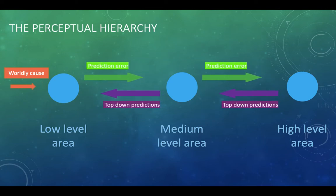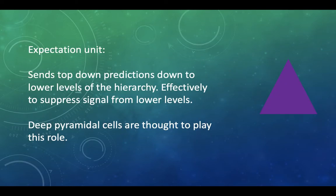Okay, so what do we need to actually do this on a neuroscience level? Well, we're going to need an expectation unit. So we're going to need something that can send top down predictions about what it's expecting at lower levels of the hierarchy. And by doing this, it can suppress the signal that's coming from lower levels. And it's thought the deep pyramidal cells might be able to play this role. Although I think it's all still being worked out exactly on a cellular basis. But deep pyramidal cells might be a good candidate for this role as an expectation unit.